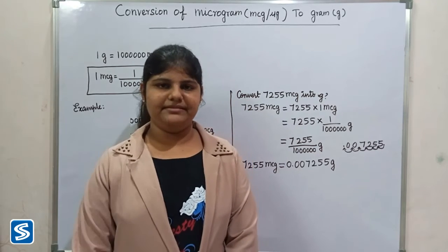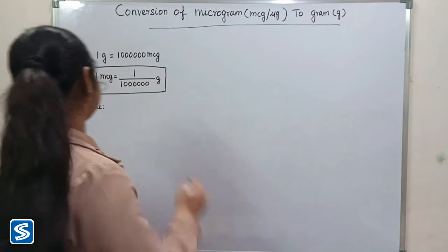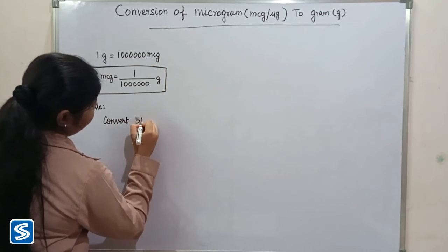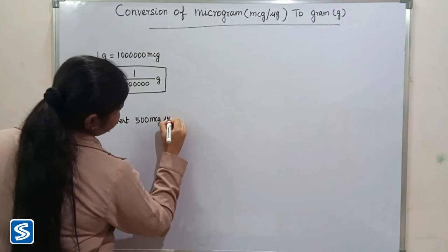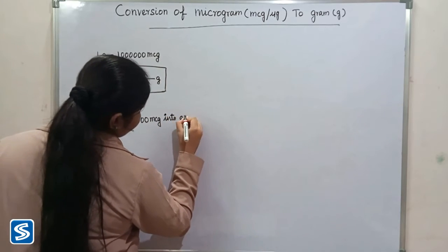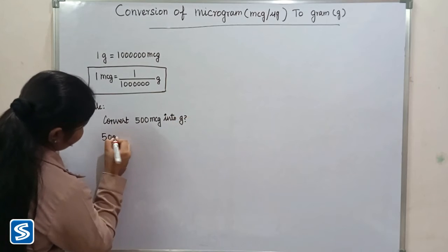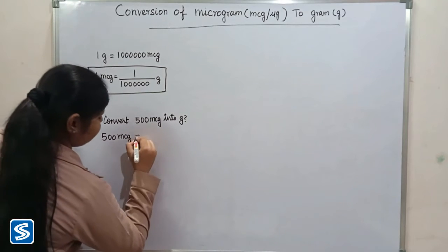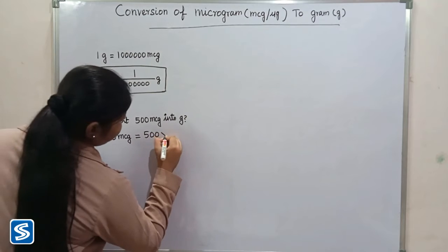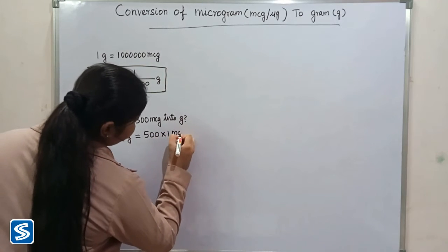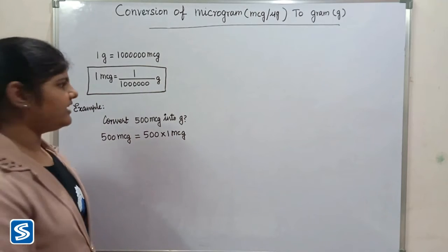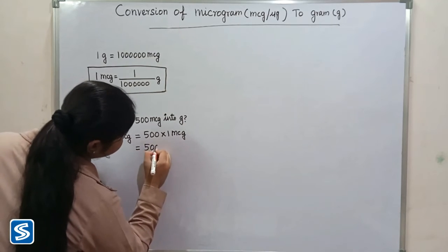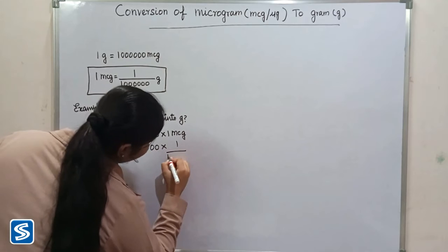Next we will take one more example. Convert five hundred micrograms into gram. Five hundred micrograms can be written as five hundred multiplied by one microgram. Now we have to substitute one by one million grams in the place of one microgram. So five hundred multiplied by one by one million grams.